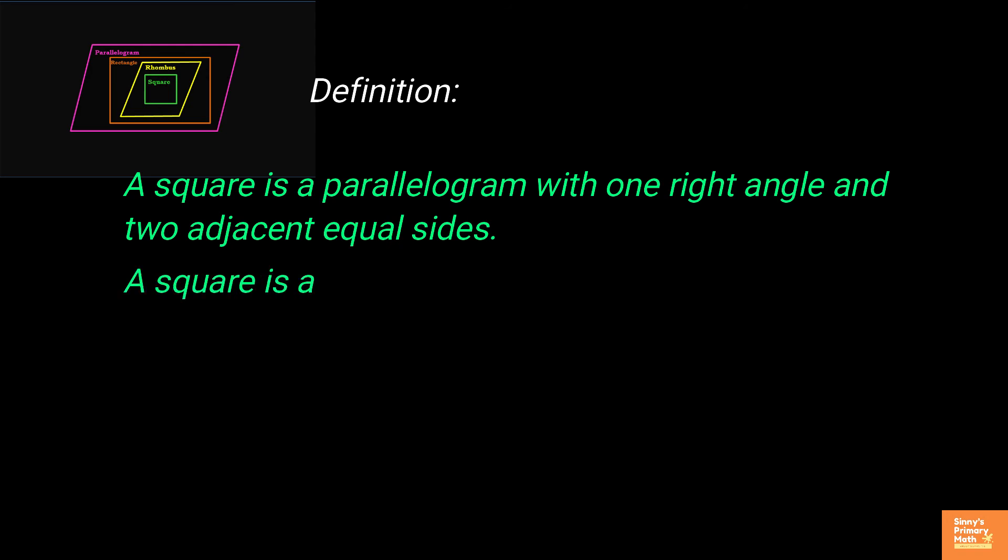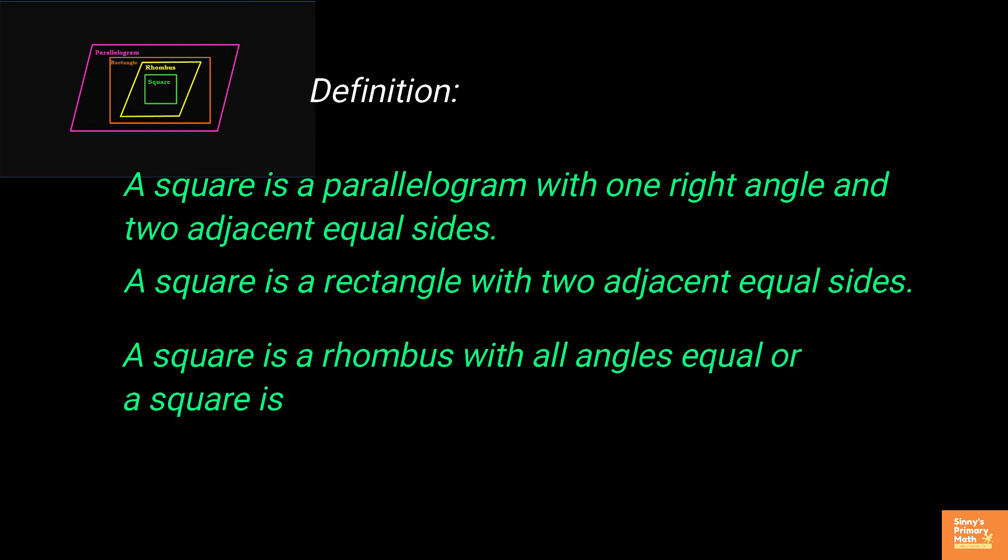See the definition. A square is a quadrilateral with one right angle and two adjacent equal sides. A square is a rectangle with two adjacent equal sides. A square is a rhombus with all angles equal or a square is a rhombus with at least one right angle.